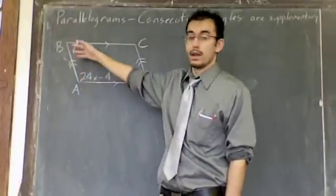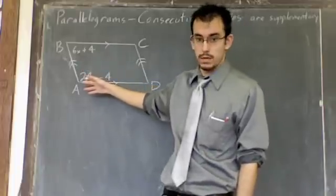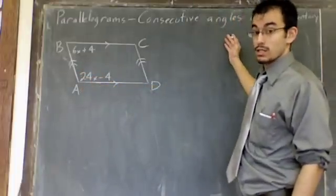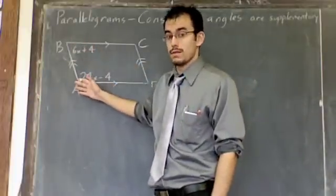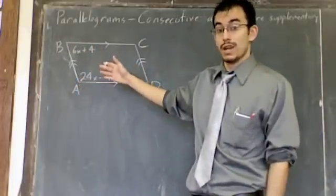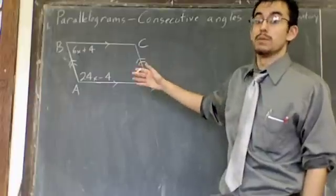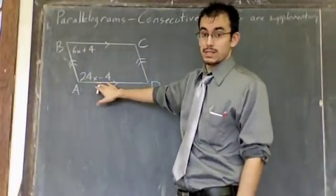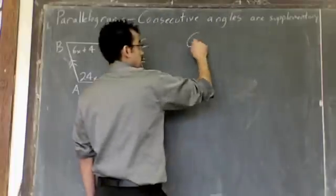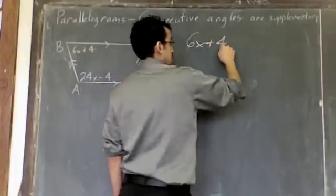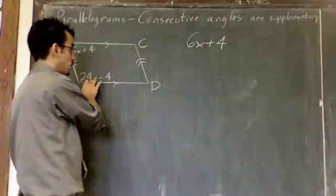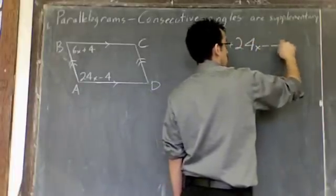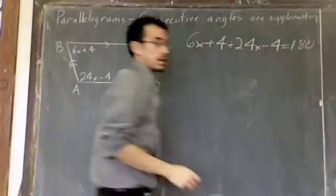Okay, I know angle A and I know angle B. I've got an expression for them. So, let's figure out how we can do this. Since I said that consecutive angles are supplementary, and I know that A and B are consecutive, I can say that these add up to 180. Because that's what supplementary means. It means that their sum is 180. So, I'm going to take this, I'm going to add it to this, and say it equals 180. I'm going to say 6x plus 4, this angle, plus this angle, 24x minus 4, equals 180 degrees.